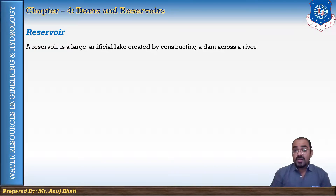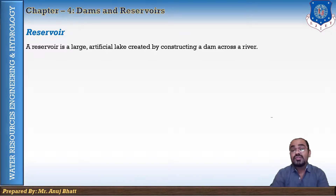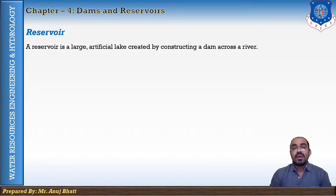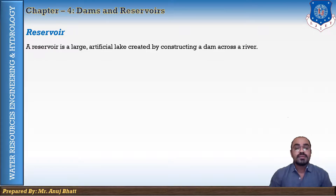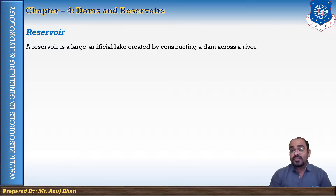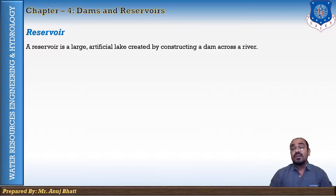It is essential to create a reservoir or an artificial lake by constructing a dam across the river so that we can match the demand for water. The stored water in the reservoir is later released during the period of low flows. Thus the reservoir is effective in removing the variation between demand and availability of water resources. In addition to storing water during heavy floods, reservoirs also reduce flood damage on the downstream side.